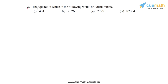In question 3, the problem statement says: the squares of which of the following would be odd numbers? We have four numbers given to us — 431, 2826, 7779, and 82004. Without any calculations, we have to determine whether the squares of each of these numbers will be an even number or an odd number.